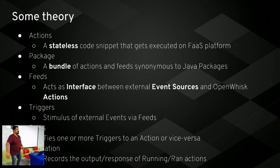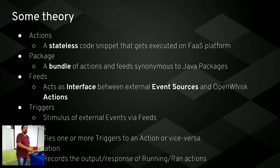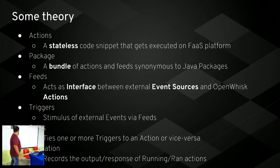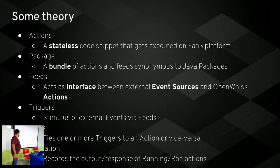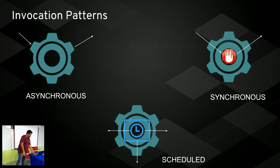When you trigger something, some action has to be invoked - that's where rules are defined. Rules can be enabled and disabled; if you want to disable a rule you can go and re-enable it. Activation is nothing but the logs of how many times a function was invoked, what the output was, and whether there were any errors.